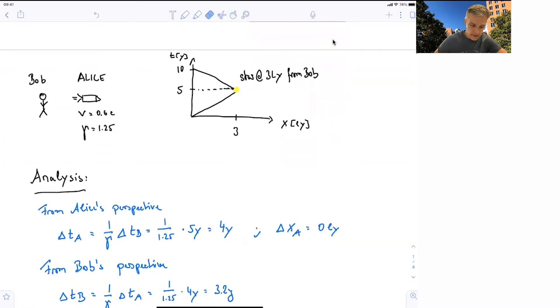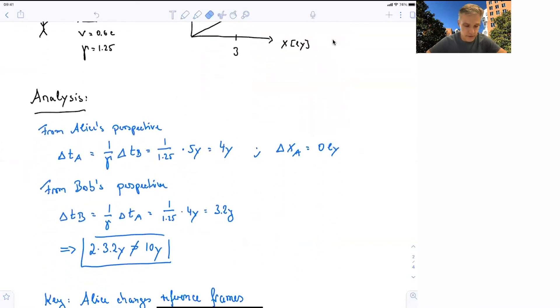So if you analyze this, from Alice's perspective, we see that for Alice, the journey takes four years, and the distance traveled for her in the spacecraft is zero. From Bob's perspective, the journey as seen by Alice is only 3.2 years long.